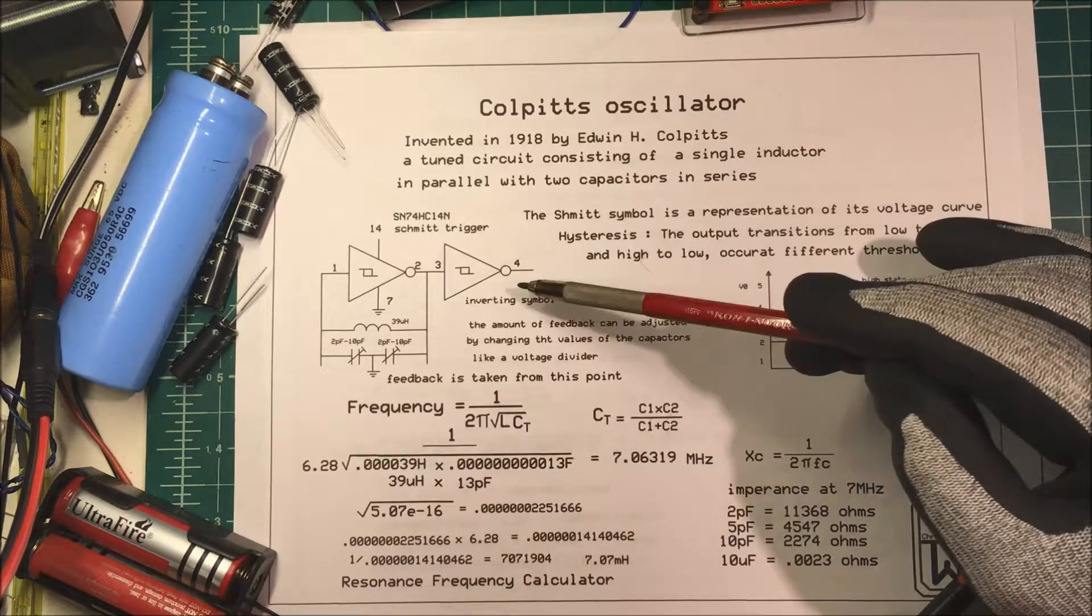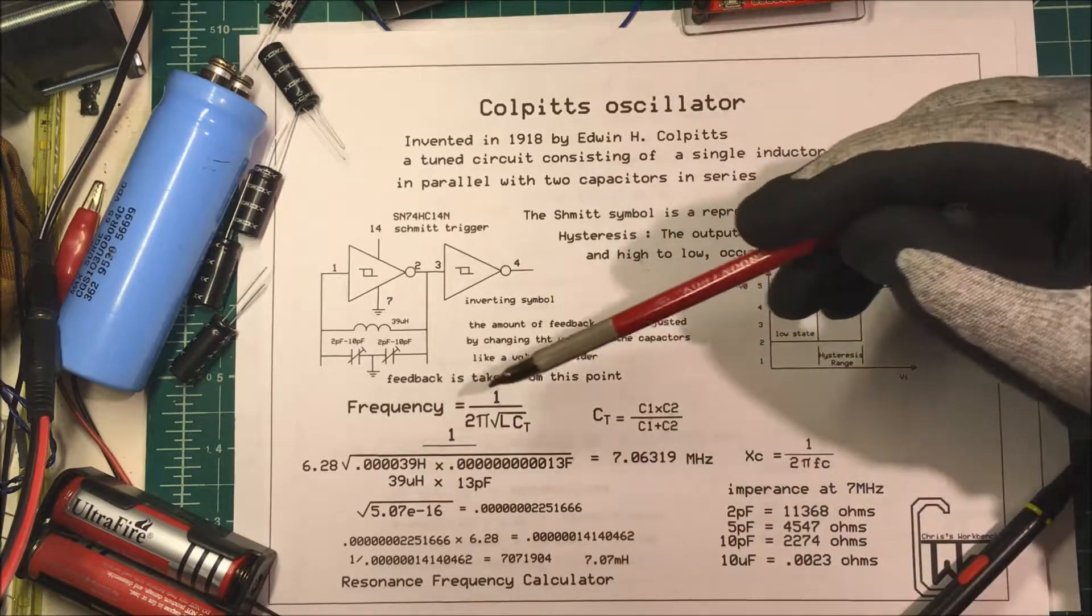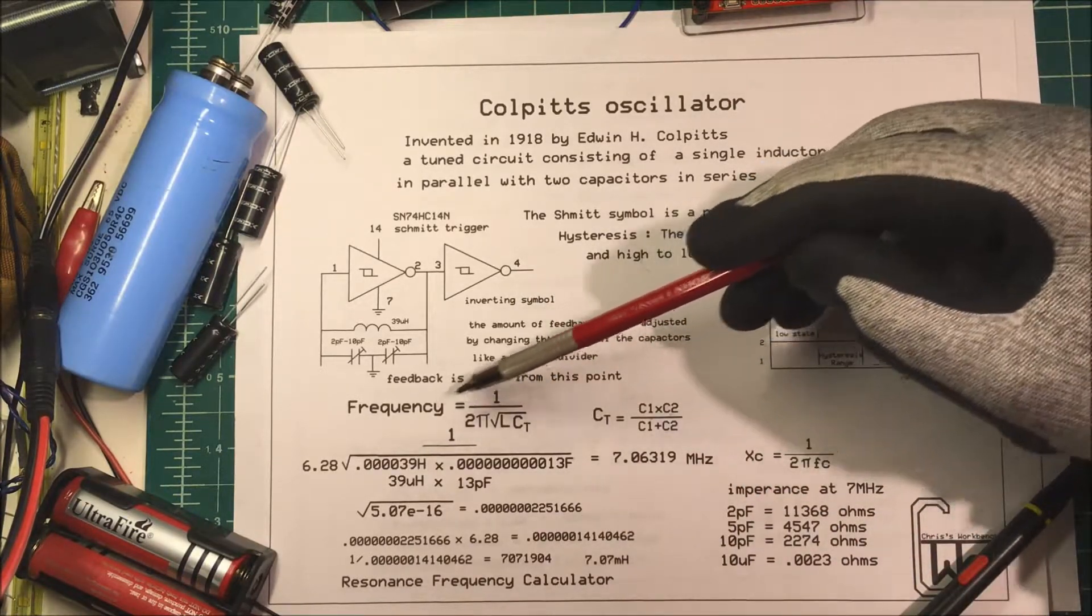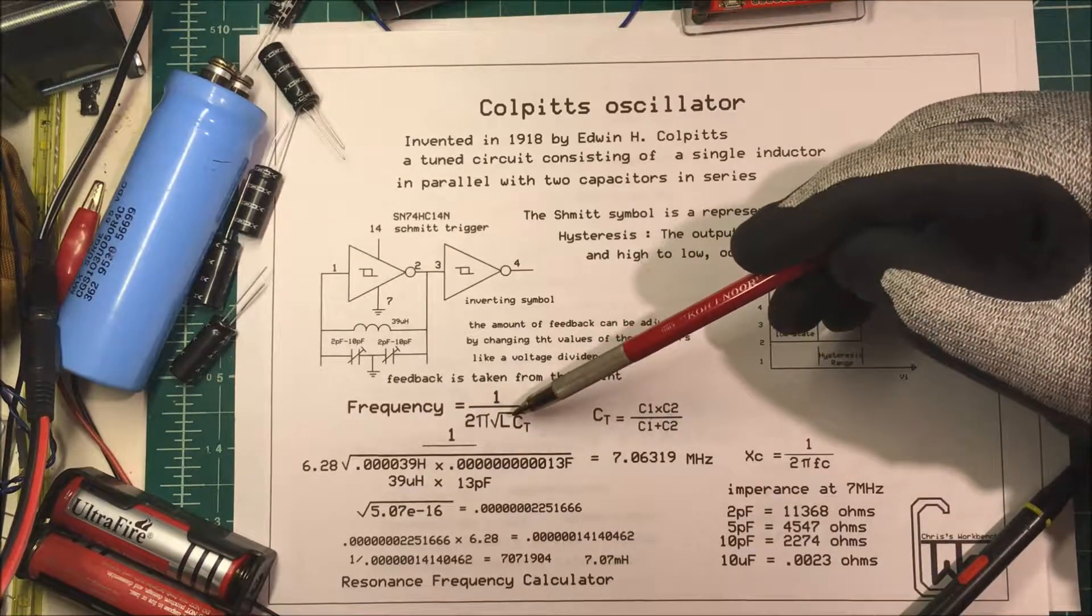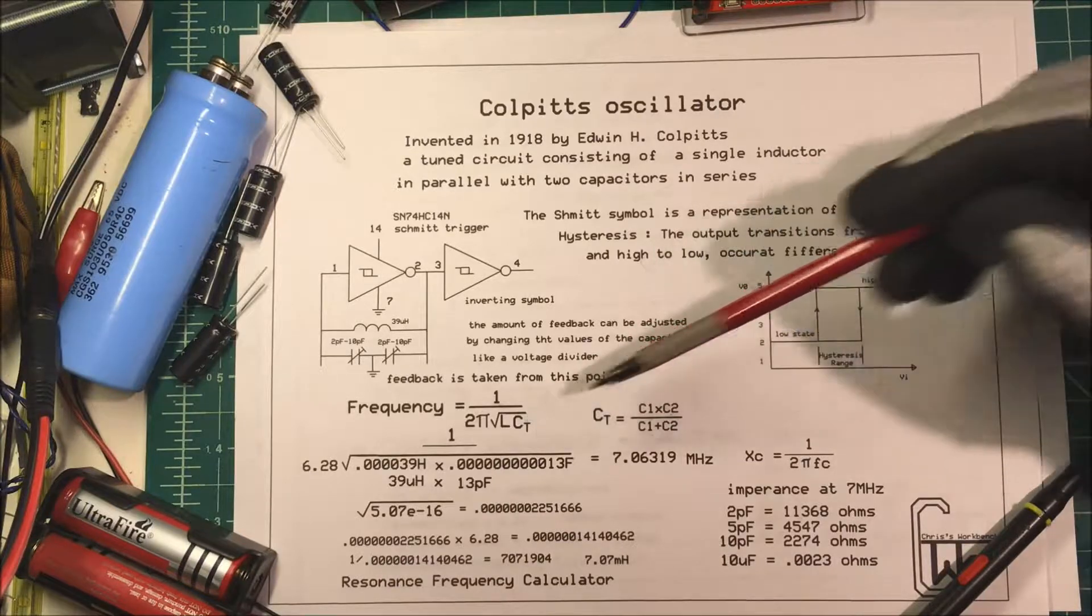But we're just going to use it for an oscillator. Now to find the frequency of the oscillator we just take 1 over 2π times the square root of the inductance times the total capacitance.